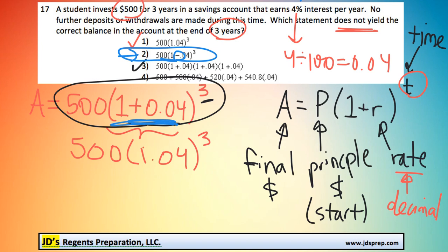Another method you could use to get to this solution is to actually type into your calculator these four different possible answers, and you'll see that option number 2 ends up with a different answer than the rest. So that's another way of getting to the same answer. Alright, that's it for this video. Thanks for visiting JD's Regents Preparation.